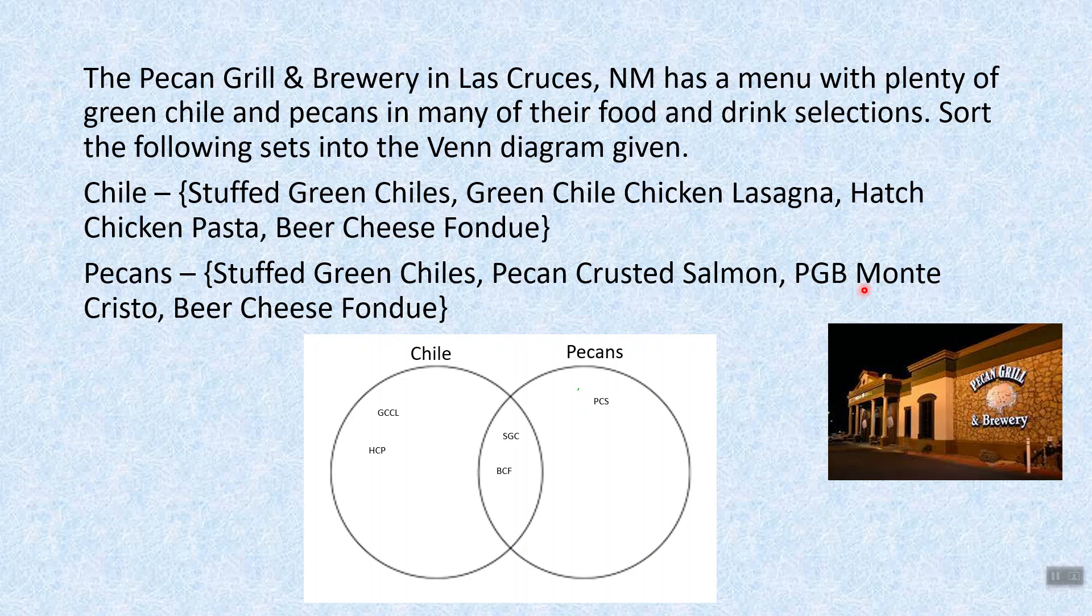Pecan grill and brewery Monte Cristo, again, highly recommended. There's no green chili in that. And we have the beer cheese fondue in the overlap already taken care of. We've gone through each set. We've compared. Is it just in chili? Is it just in pecans? Or do the foods have both green chili and pecan?